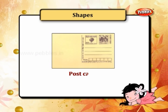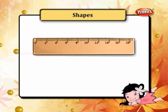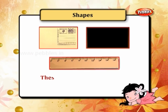This is a postcard. This is a board. And this is a ruler. These are rectangular in shape.